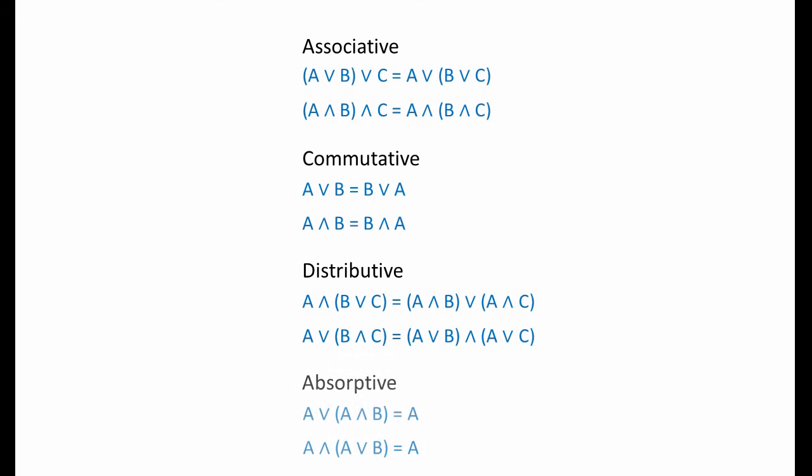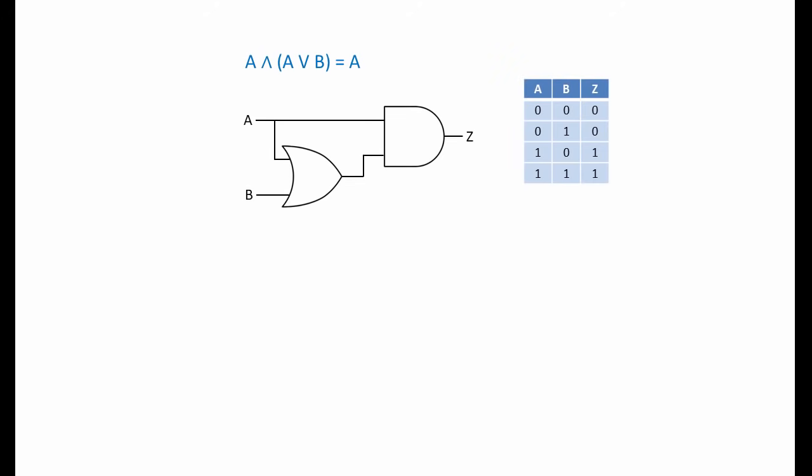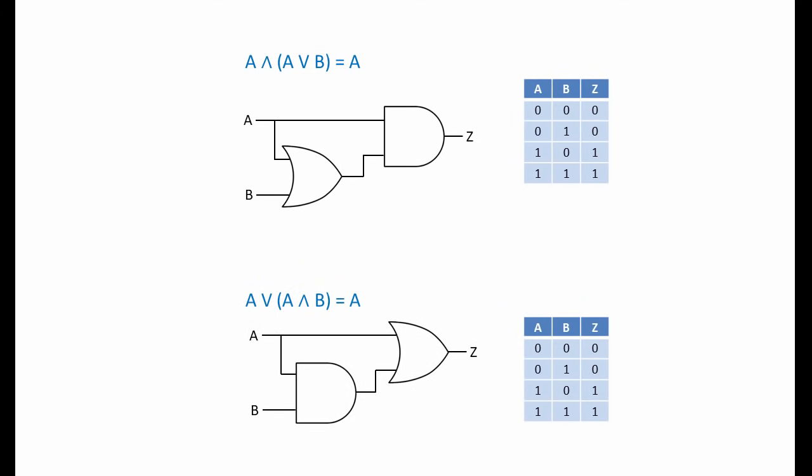Our distributive law is now in place. We can now add another law, the so-called absorptive law, also known as the redundance law. The absorptive law can also be proved with truth tables. Notice that only when input A is 1 can the output be 1 — the output is always the same as A. So if you can spot the term A AND (A OR B) within a complex expression, it can be replaced with simply A. Similarly, the term A OR (A AND B) can also be absorbed and replaced by A alone.